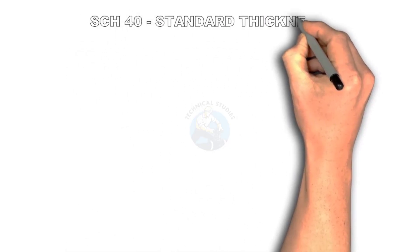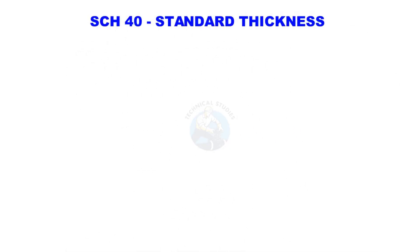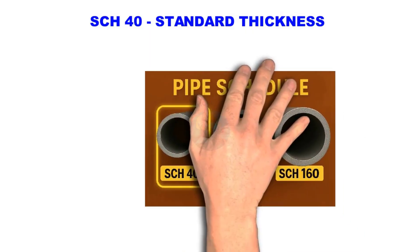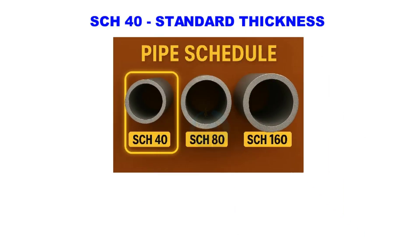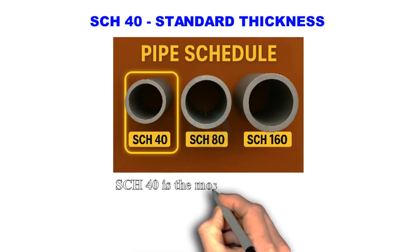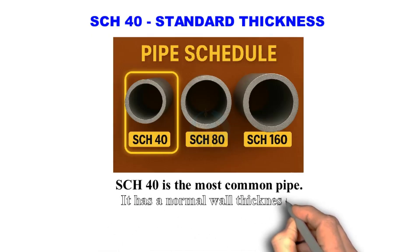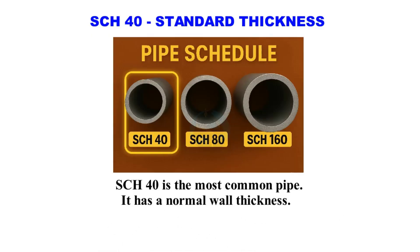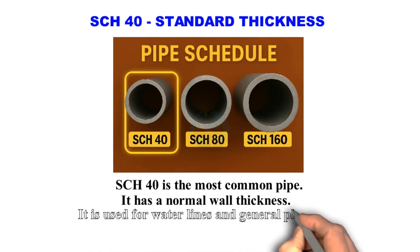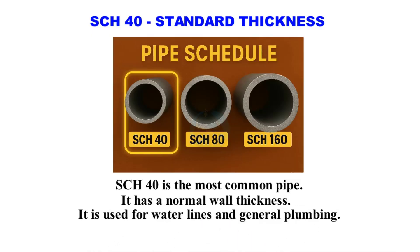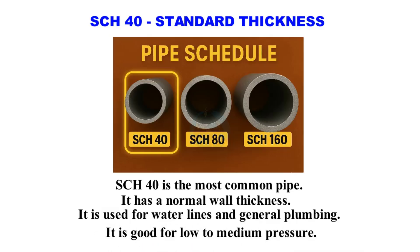Schedule 40 — Standard Thickness. Schedule 40 is the most common pipe. It has a normal wall thickness. It is used for water lines and general plumbing. It is good for low to medium pressure.